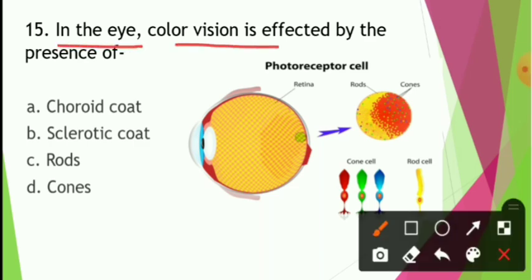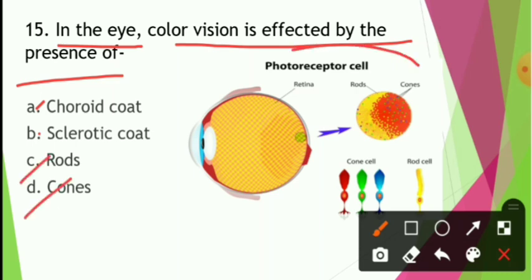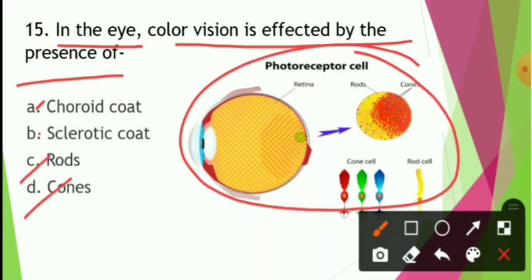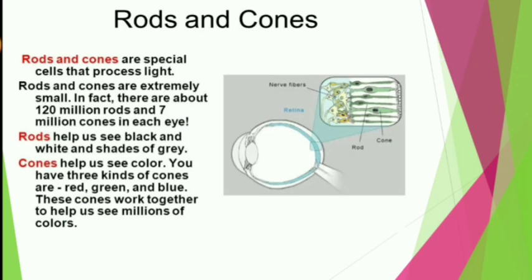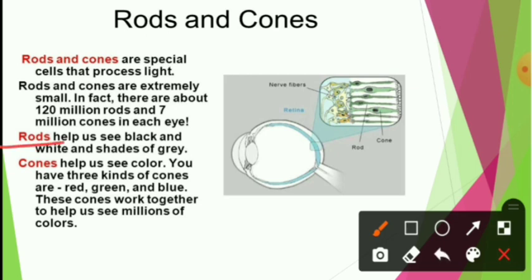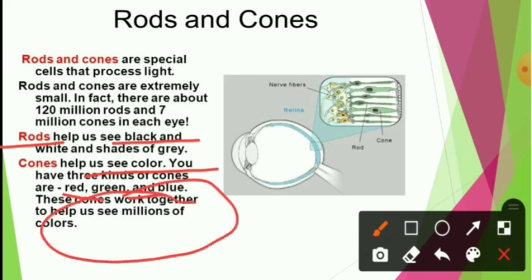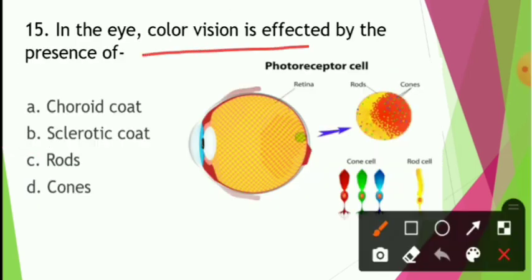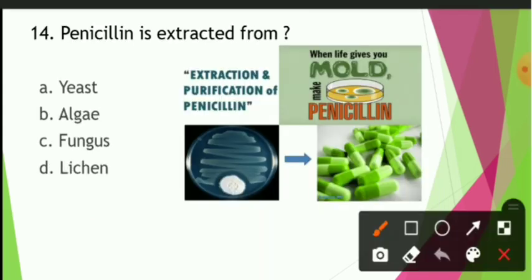In the eye, color vision is affected by the presence of: choroid coat, sclerotic coat, or rod and cones? Cone cells are responsible for color vision — red, blue, and green. Rod cells are responsible for black and white shades. Cones are used for color (red, green, blue). Don't forget the test — it is very important. Please revise before the next class.